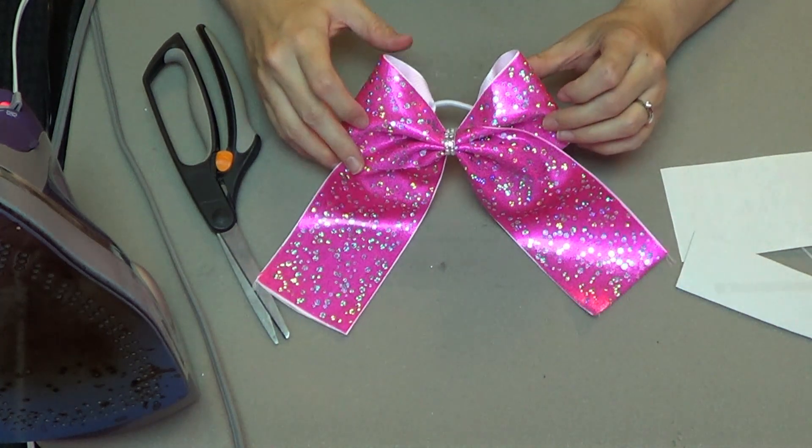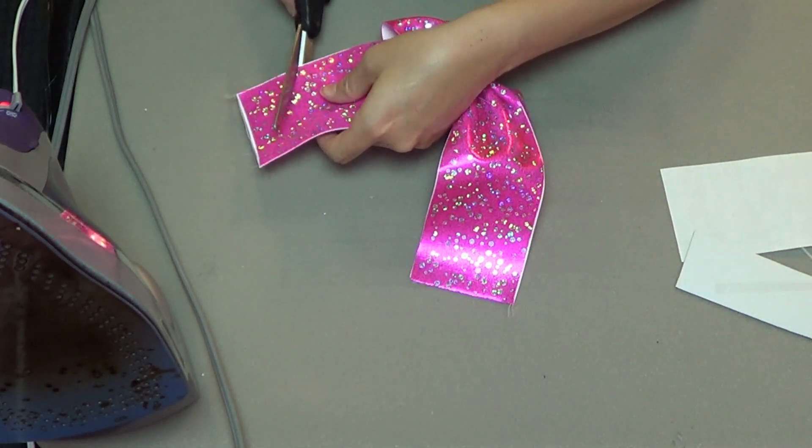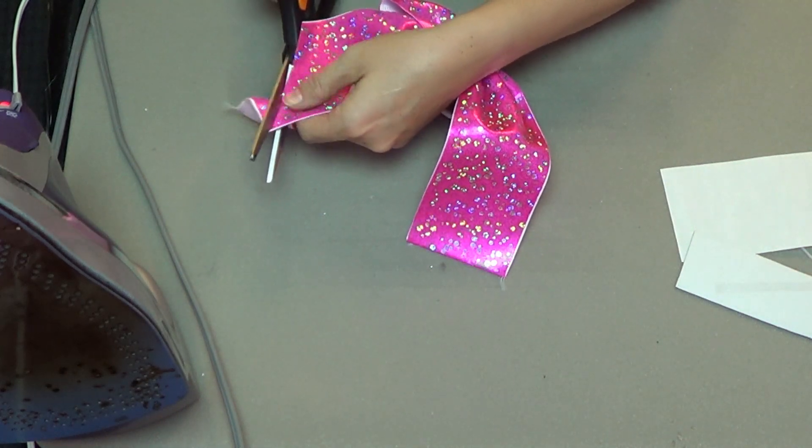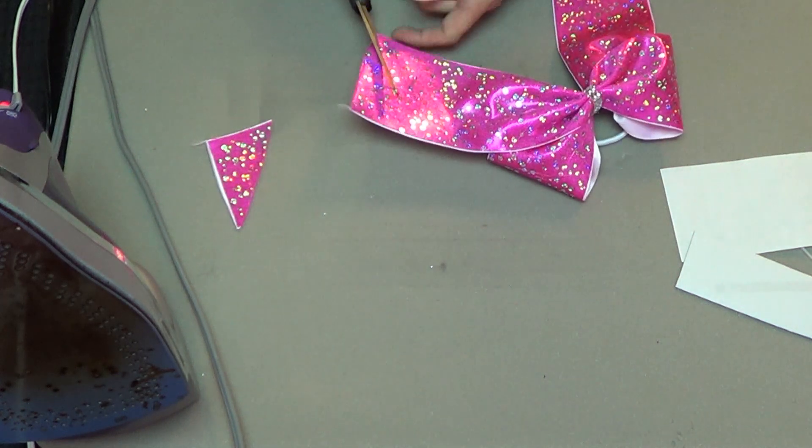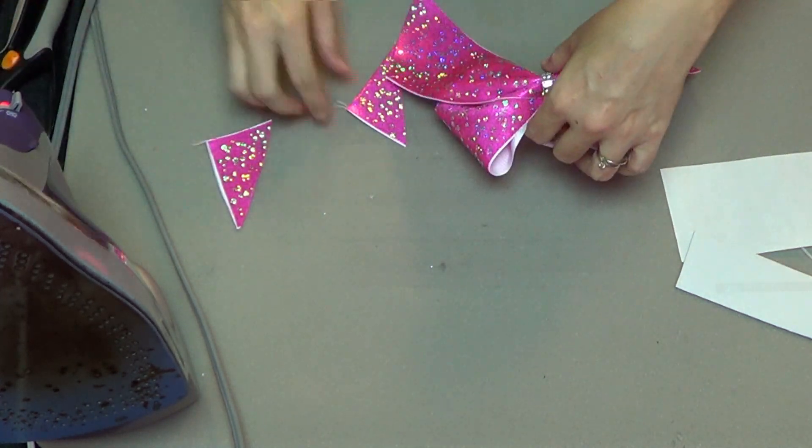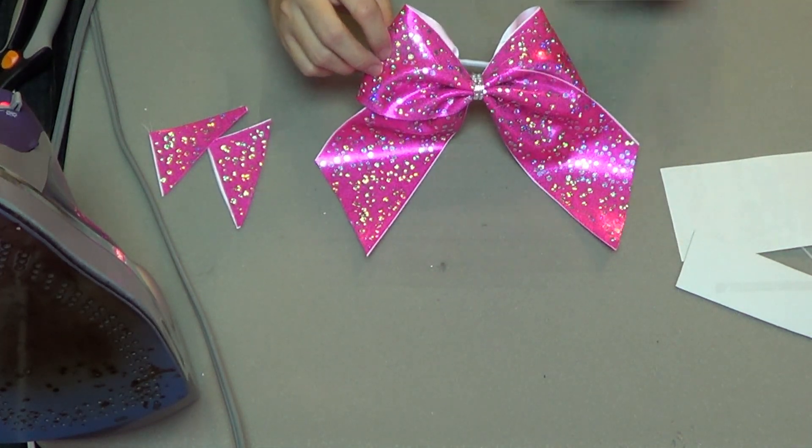Now for these tails, I'm just going to do a quick angle cut. Make sure that you get them proportional, and your cheer bow is complete.